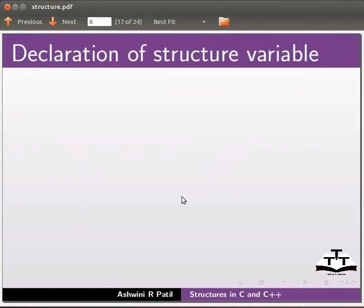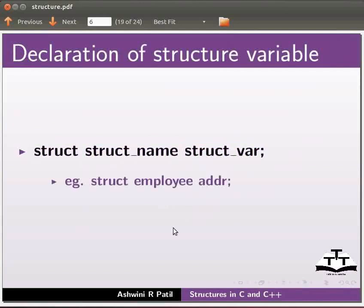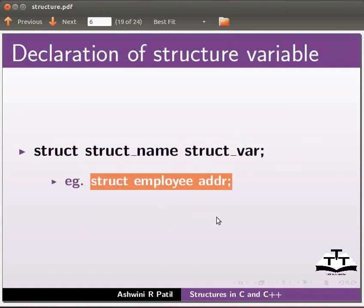Now we will see how to declare a structure variable. The syntax for this is struct struct_name and struct_var. Struct_var is the variable of type struct_name. Example: struct employee addr. Addr is the variable of type employee.